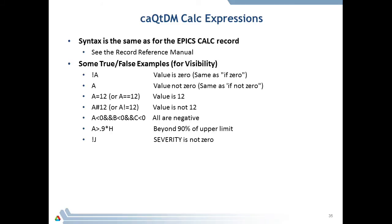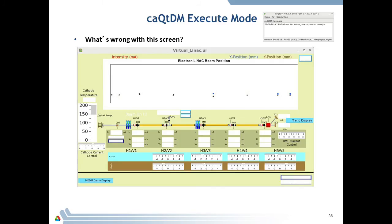Here are some calc expressions — these are taken from the record reference manual and use the same calc expressions. For example: 'A is not zero, value is 12,' logical AND with all values negative. You can also reference H — the upper limit of channel A — for example, 90% of the upper limit of channel A. If you don't have a channel access connection, all the values assigned for channel access will appear white on the screen. This means there's no channel access connection — the reasons can vary: maybe the IOC was turned off, or there's no network connection.